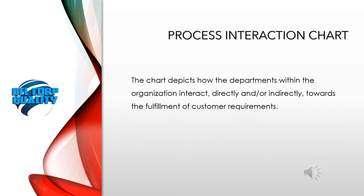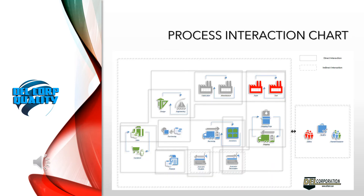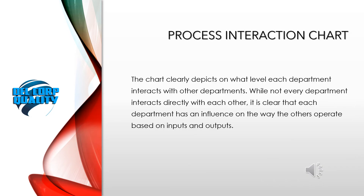The chart depicts how the departments within the organization interact directly and or indirectly towards the fulfillment of customer requirements. The chart shows the relationship between departments and whether the interaction directly or indirectly affects product realization activities. The chart clearly depicts on what level each department interacts with other departments.